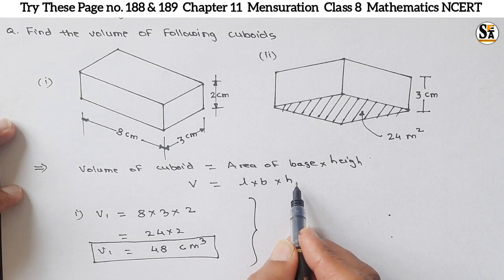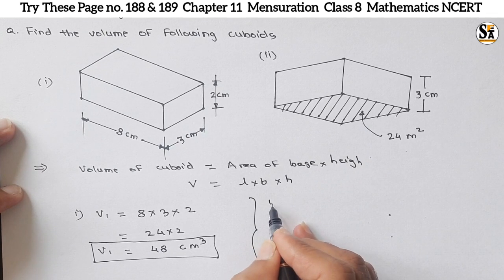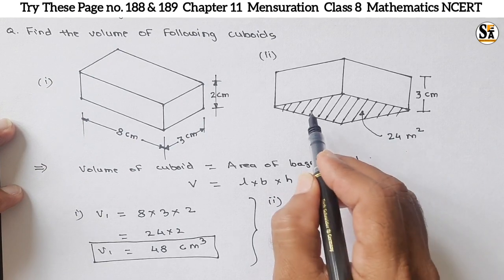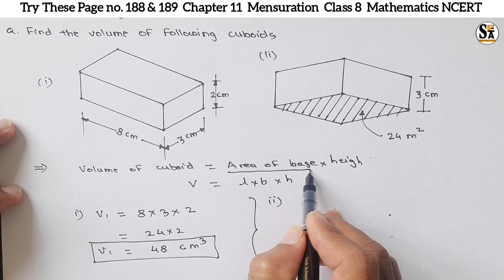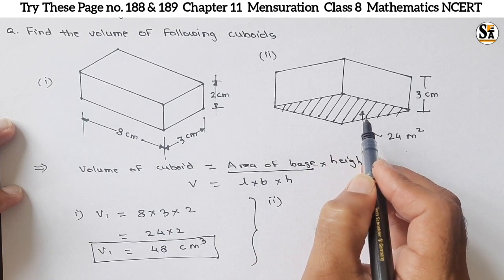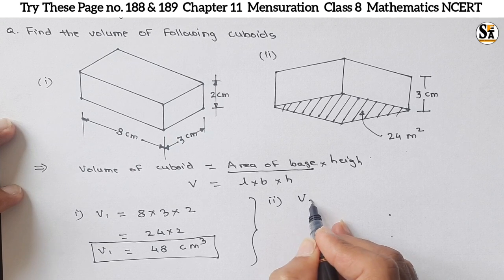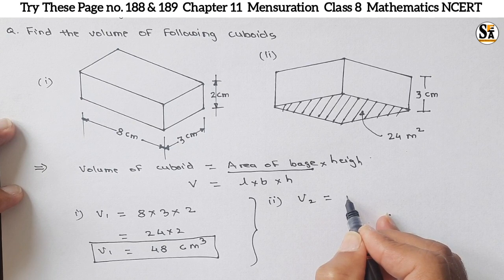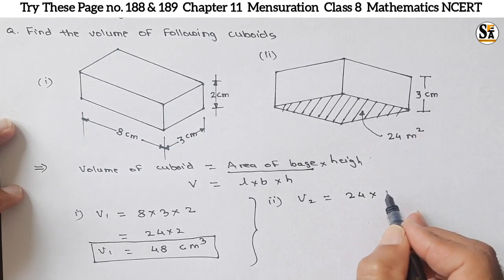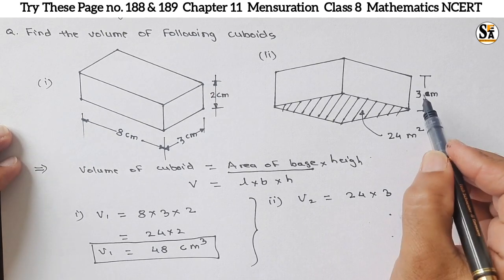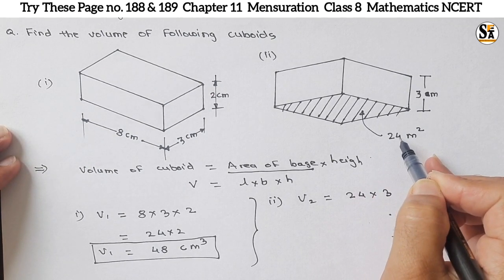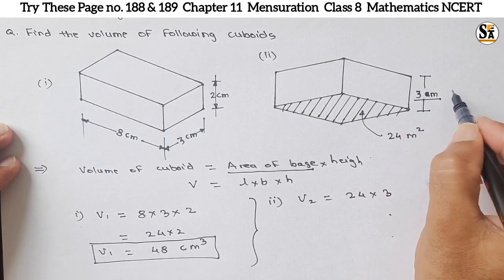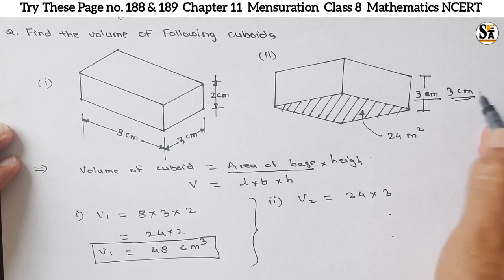For the second example, l and b are not given individually, but the base area is directly given. We just need to multiply base area by height. So V₂ = base area × height. Here base area is given as 24 meter square, and the height is given as 3 centimeter.